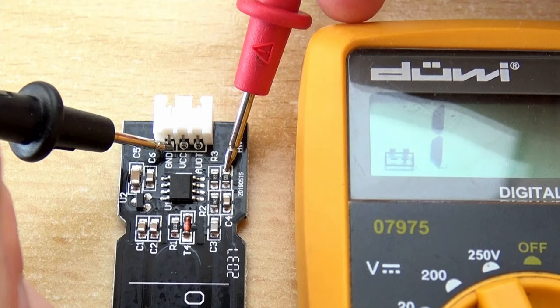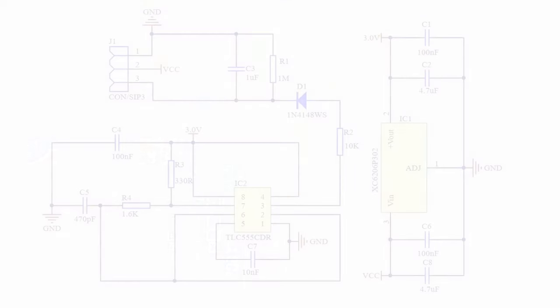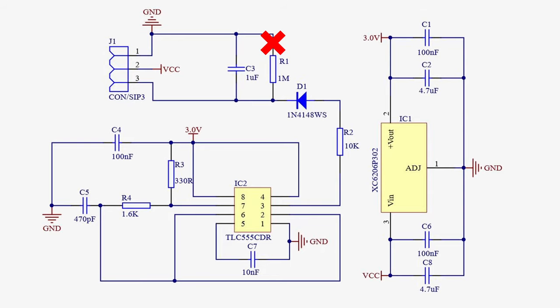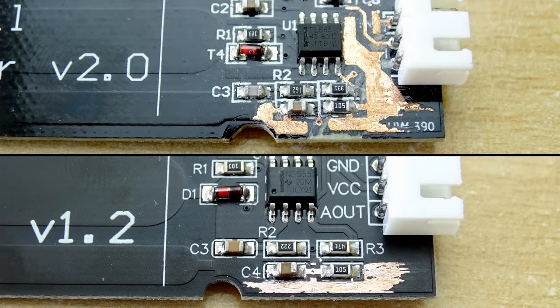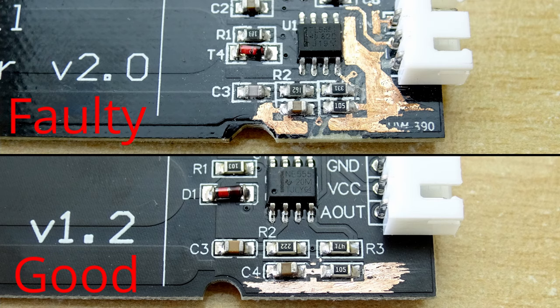However, the check with the multimeter shows that this is not the case for the ground side. So with one side disconnected, it's like the resistor isn't there at all. How could this happen? To find out, I have removed the silkscreen from a faulty and a good sensor to compare the copper paths.